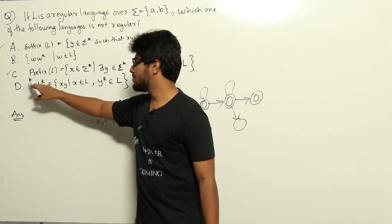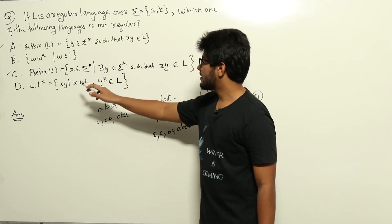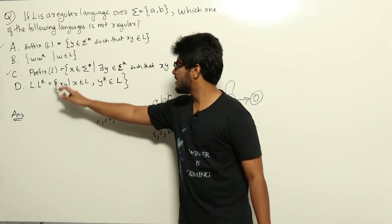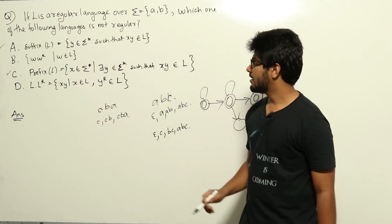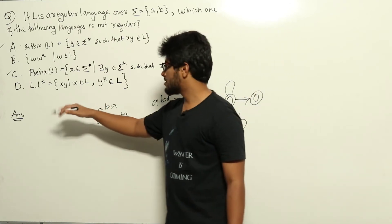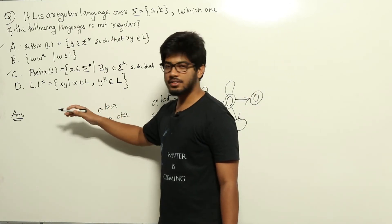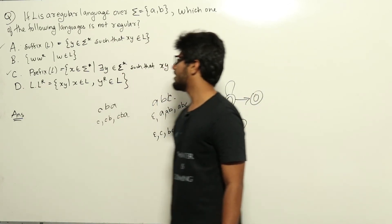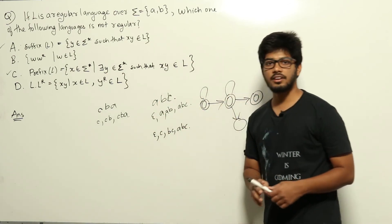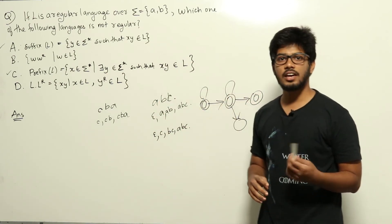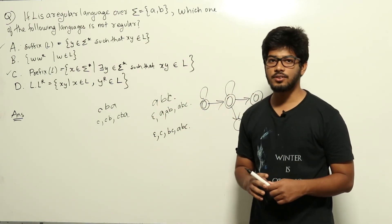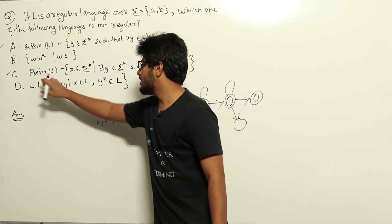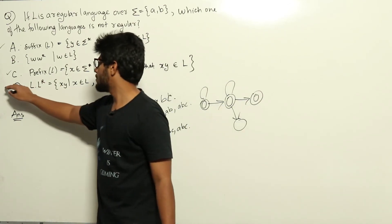Now look at option D: L concatenated with L-reverse. L is regular, and L-reverse is also regular because the reverse of a regular language is regular. Furthermore, regular languages are closed under concatenation, so L concatenated with L-reverse will also be a regular language.